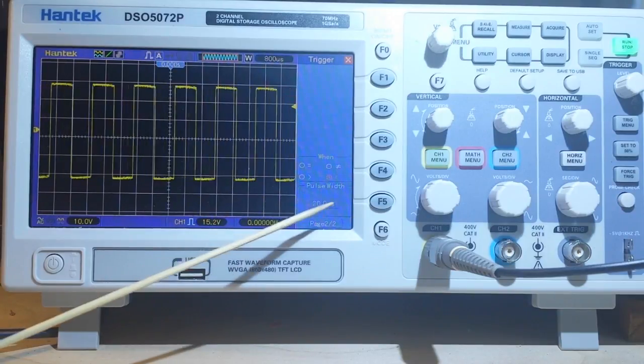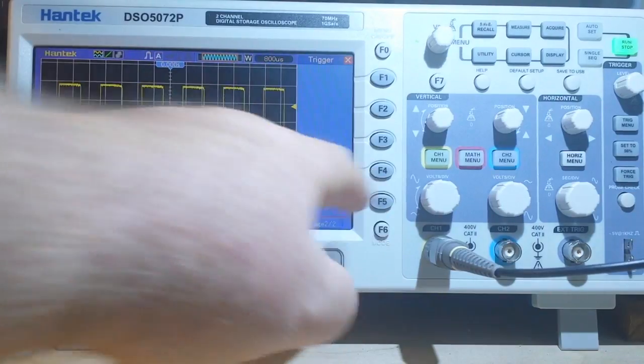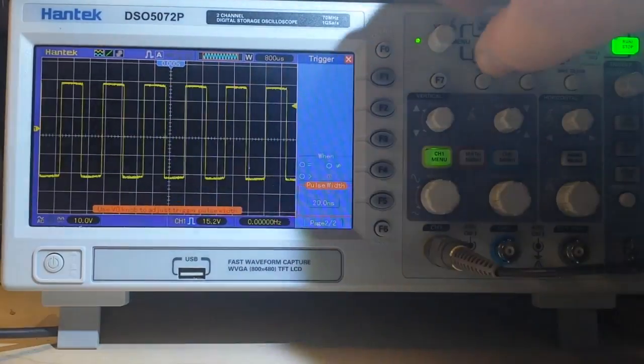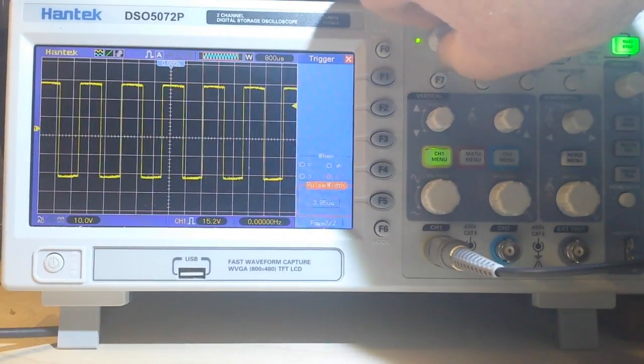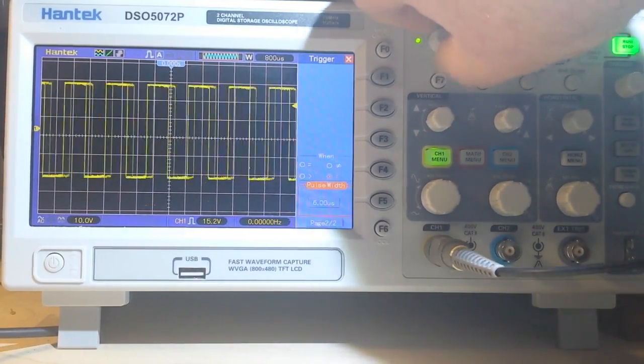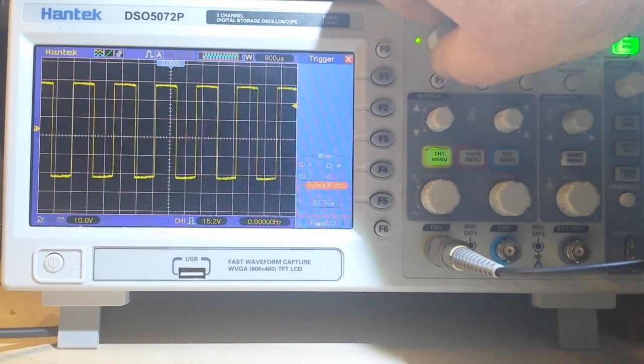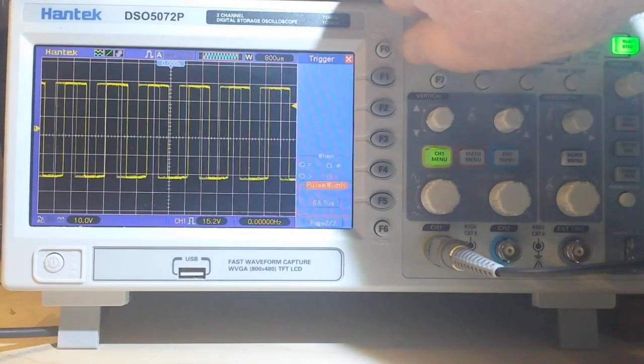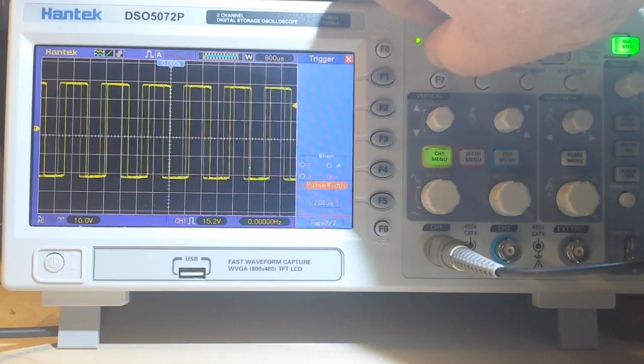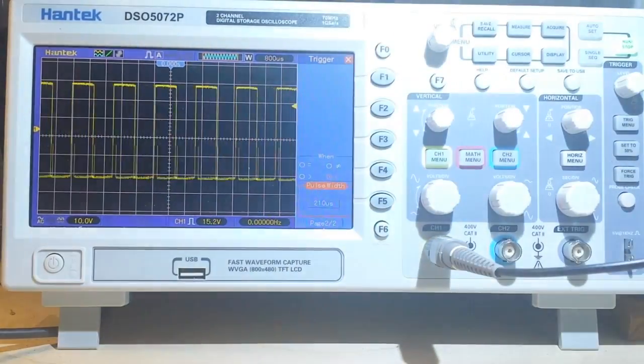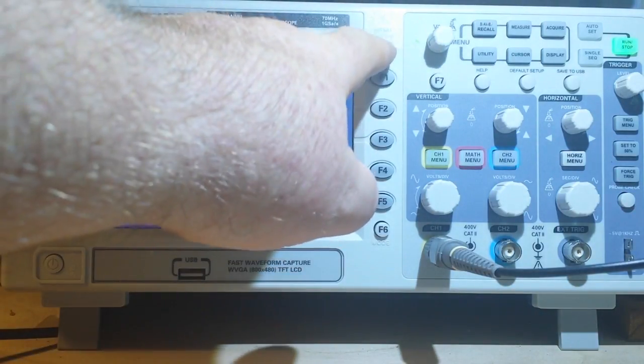So we're going to trigger on a pulse width that is less than what we had in our pulse width there. See, I should have picked greater than, huh? Bear with me. Alright, we'll adjust it this way. So we're now triggering when our pulse width is less than 210 microseconds.